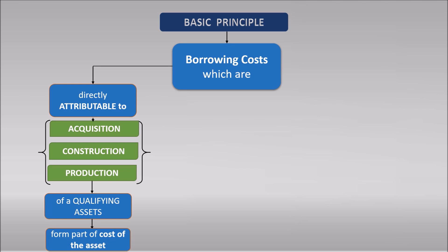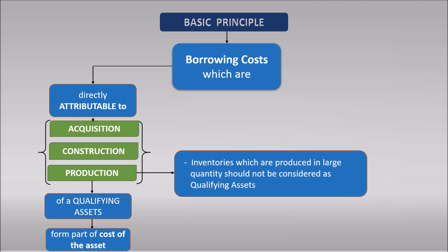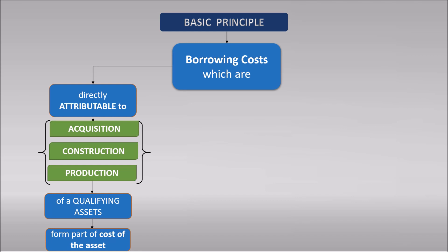Construction means you have created a qualifying asset such as a building or large project — then the borrowing cost of the project can be capitalized. Production means you have produced a qualifying asset. However, please note that as per the provisions of IND AS 23, inventories which are produced in large quantities should not be considered as qualifying assets. If all these conditions are satisfied, then borrowing cost can form part of the cost of the asset.